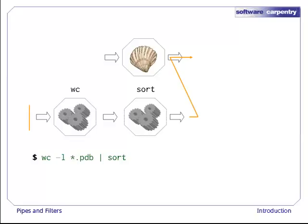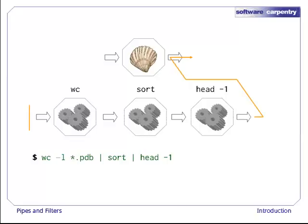Since there's no redirection with greater than, sort's output goes to the screen. And if we run wc -l *.pdb pipe to sort, pipe to head -1, we get the three processes shown here with data flowing from the files, through wc to sort, and from sort through head to the screen.